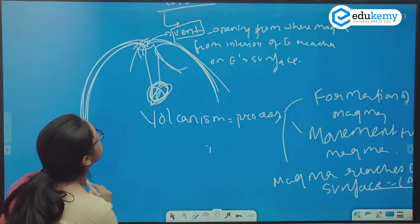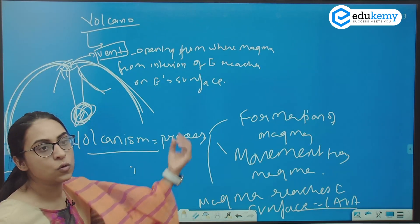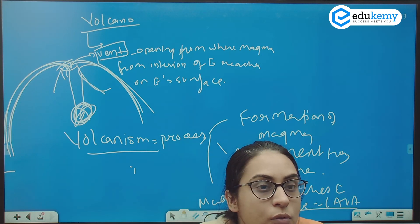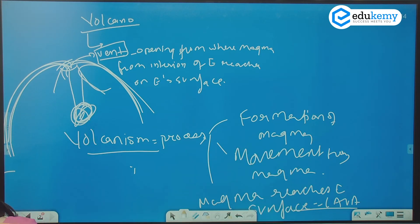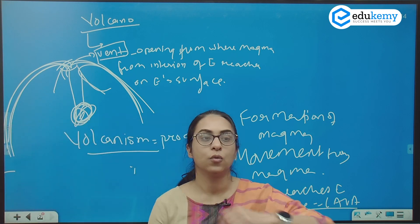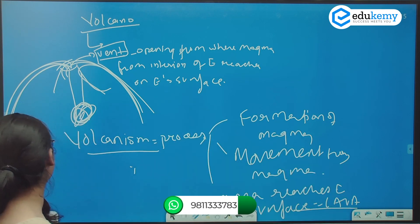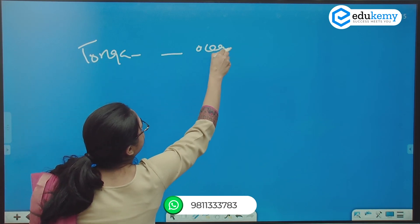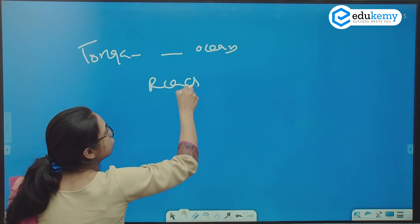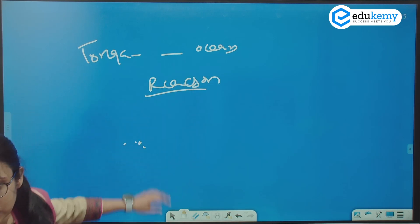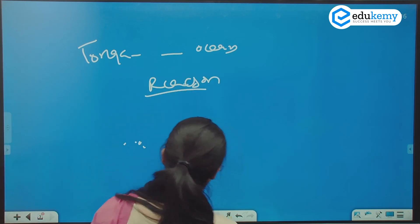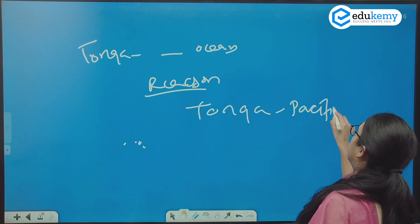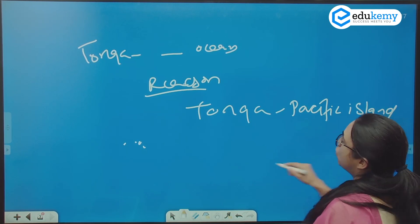Recently there was volcanism. Have you read in the newspaper? Where was the recent volcano erupted in the world? The entire world was shook. Have you heard about the Tonga island? There was a volcano in Tonga island. It was in the Pacific ocean. Tonga island is a part of the Pacific island, it is there in the Pacific ocean.